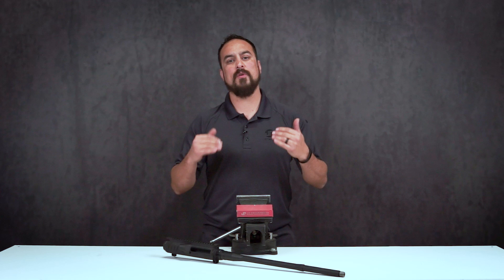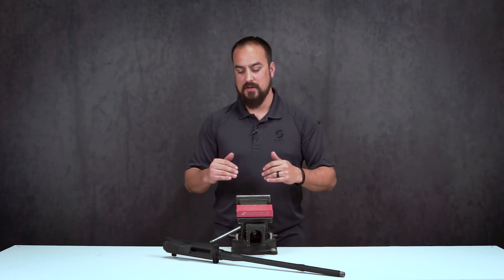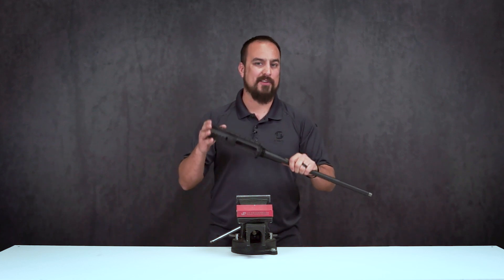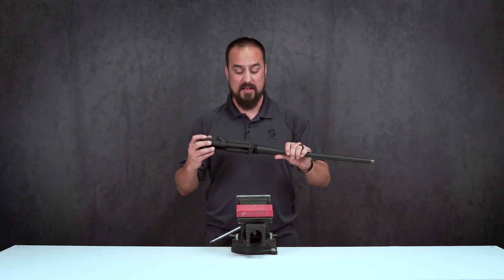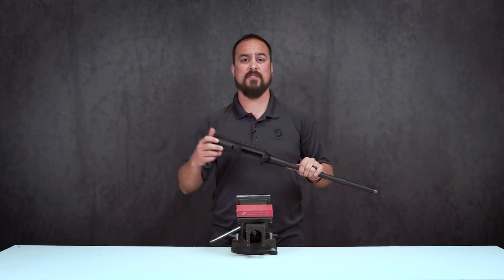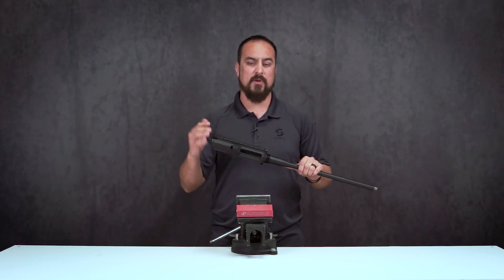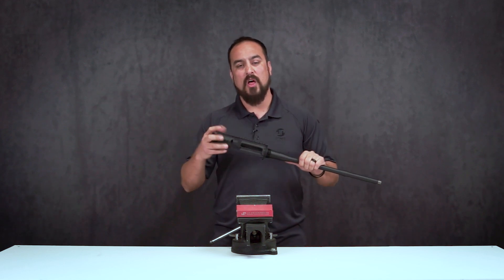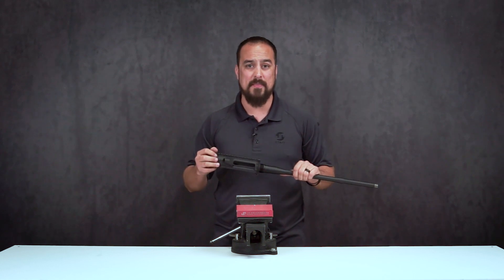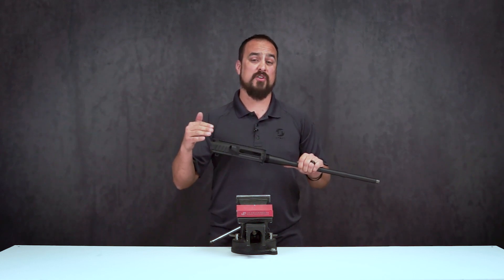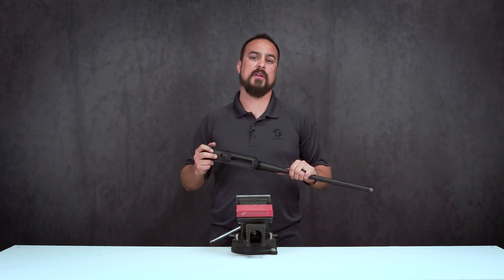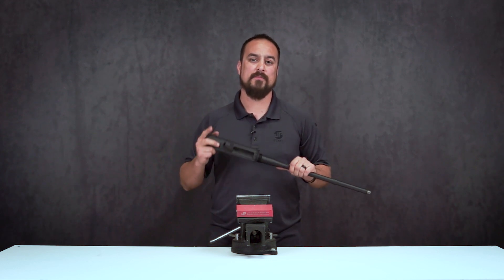All right guys so that is the thermofit process we've been doing here at JP for years. Now like Matt was saying on the 2019 series uppers whether it's a LTC 19 or a PSC 19 that is a required process now. Not only is it a required process but it also is a process that's going to help your rifle be that much more accurate. We know a lot of you home builders at home are going to do this. If you have any questions please comment below, we'll do our very best to help you out. Please be sure to like and subscribe, click on the bell for notifications and follow us on all of our social media platforms and we will see you guys at the range.